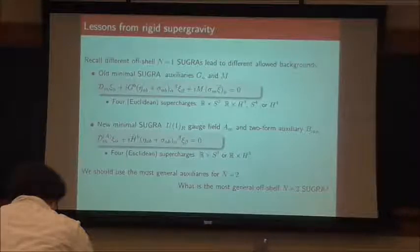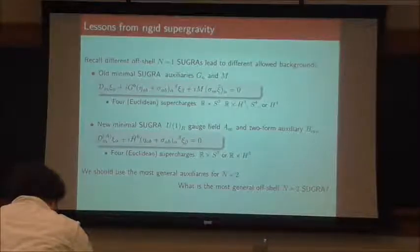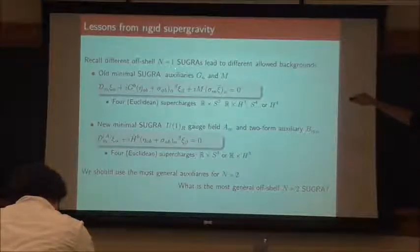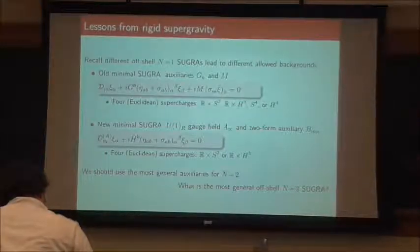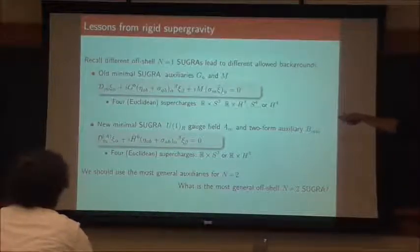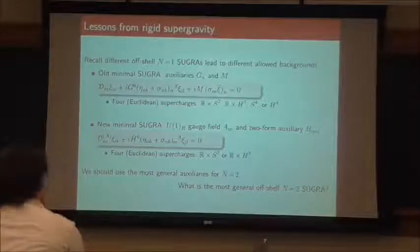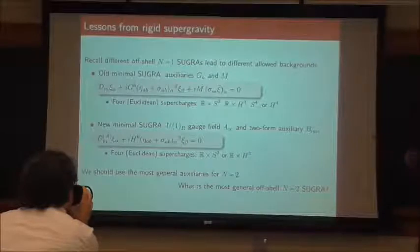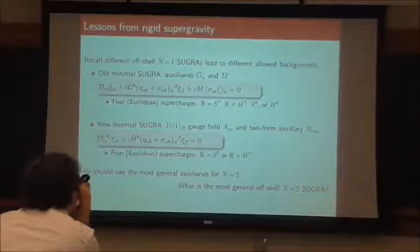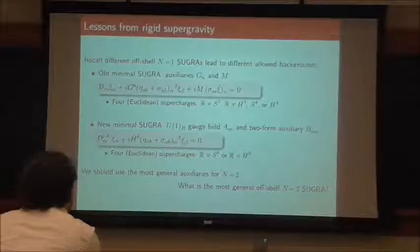I want to recall the situation for N=1. In N=1, there are two different off-shell supergravities that people tend to use, called old minimal and new minimal. For old minimal, the auxiliaries you have are a complex scalar M and a real auxiliary vector G. The Killing-spinor equation involves both objects appearing, and there's actually some mixing of chiralities when M is turned on. If you solve the conditions for four Euclidean supercharges, you essentially find: R×S³, R×H³, S⁴, H⁴. That's your set of possibilities.